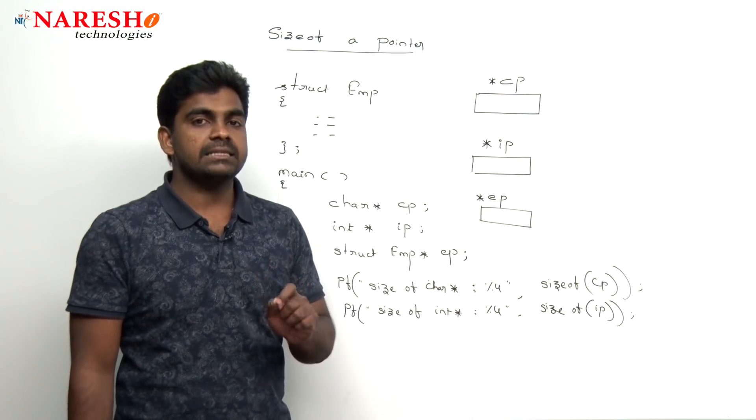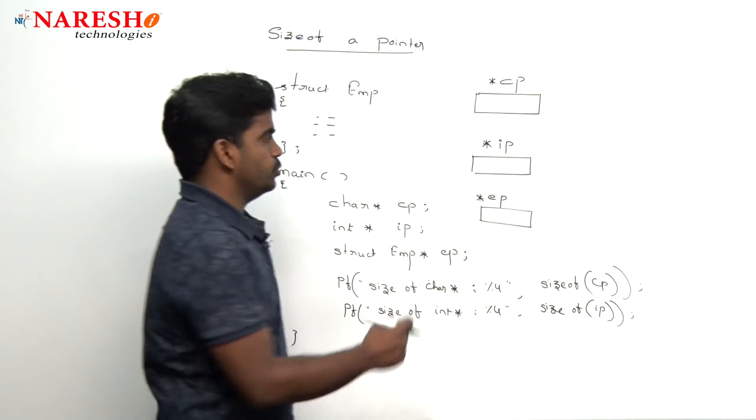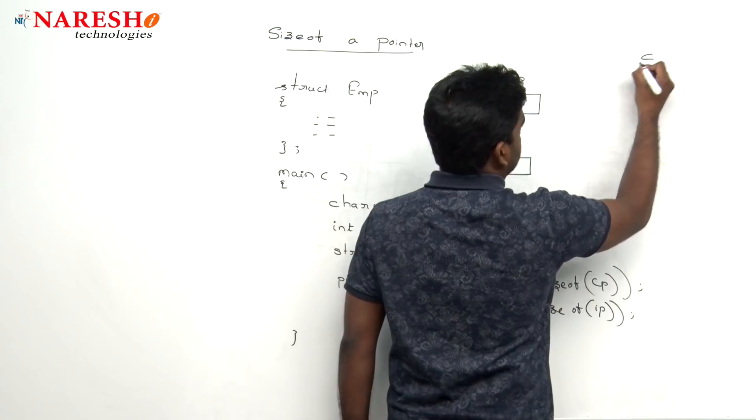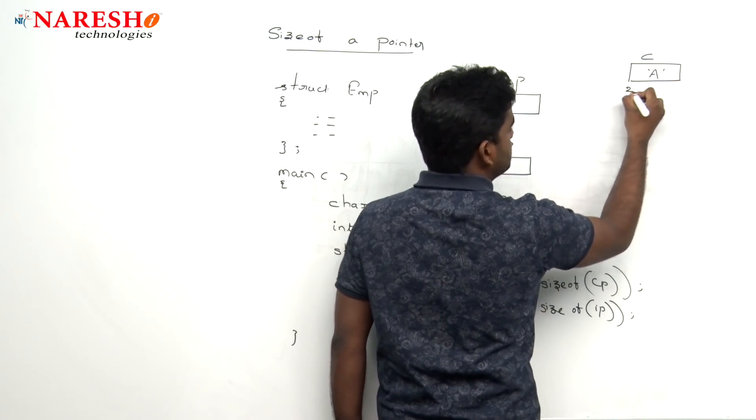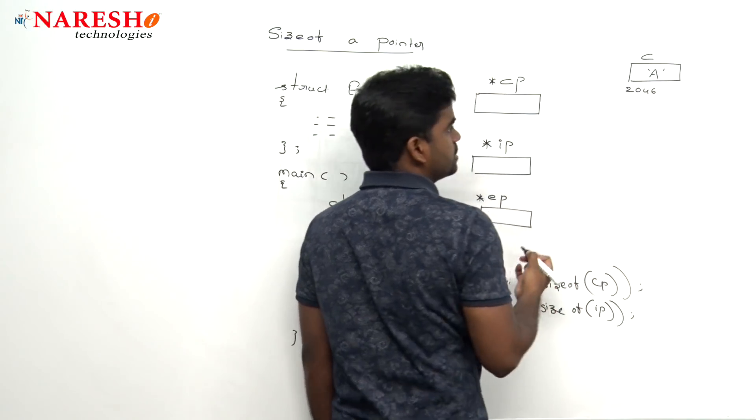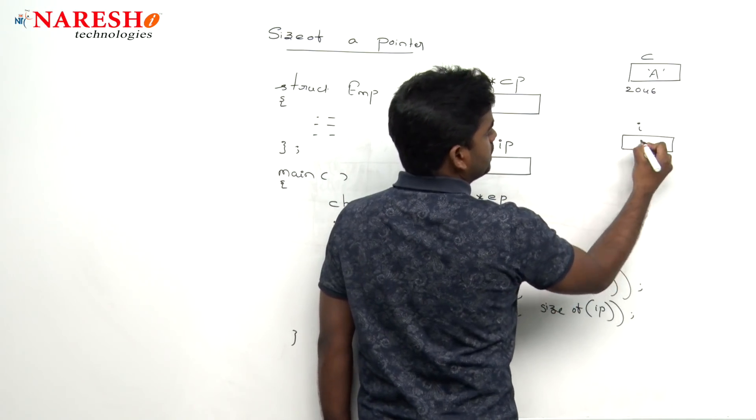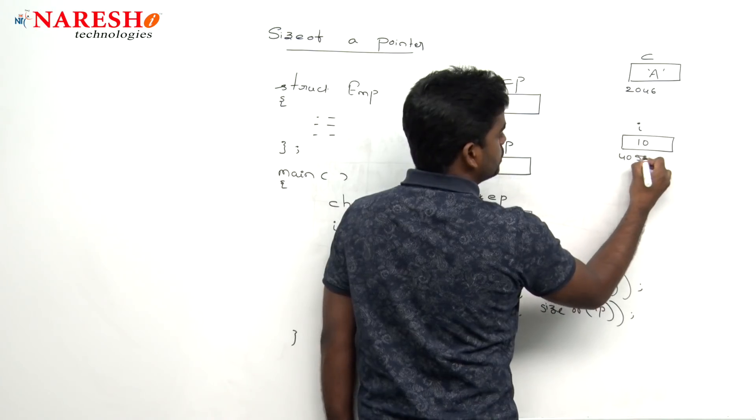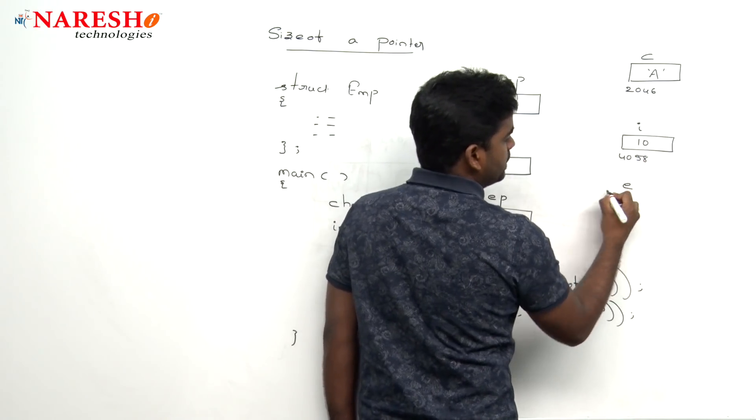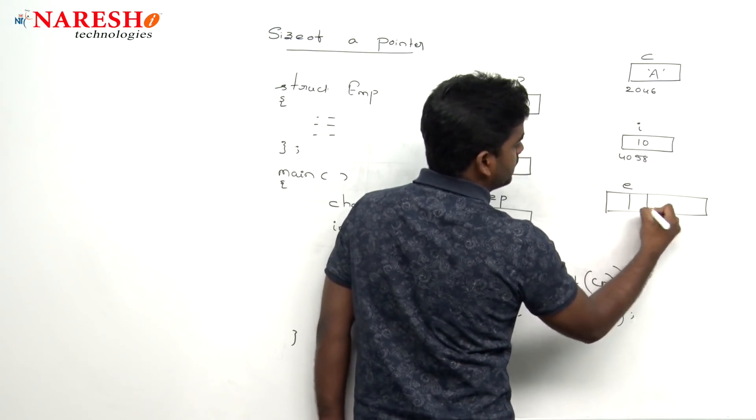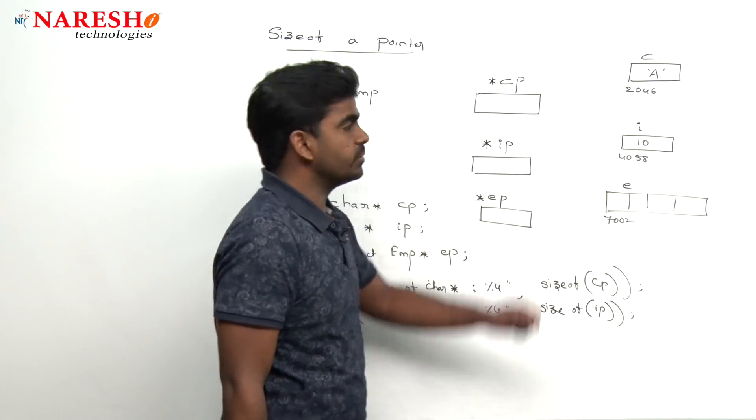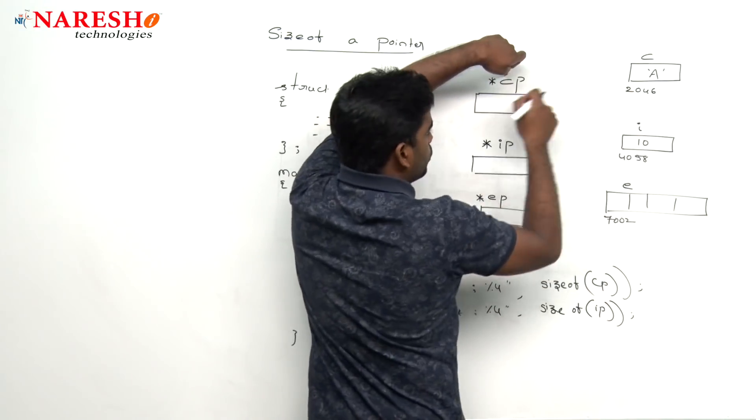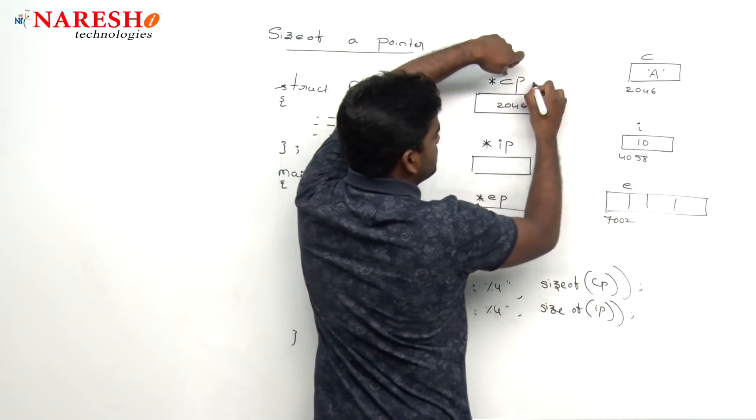We are not printing the size of data. Like suppose we are taking one character, character a, this is the address like 2046 and integer i, and here it is like 4058 and next one is a structure like employee number name and everything something like 7002. A character pointer holds 2046 address, it is pointing.